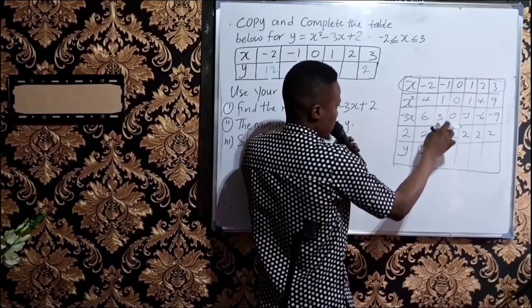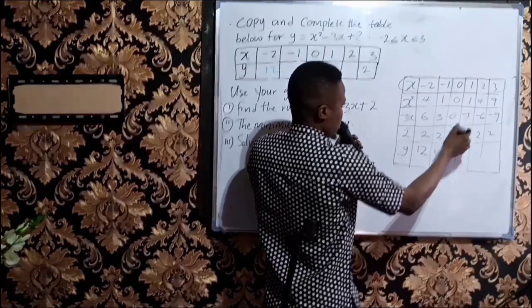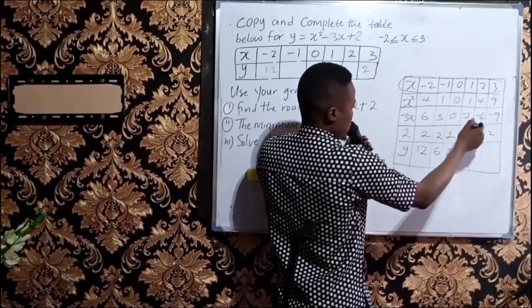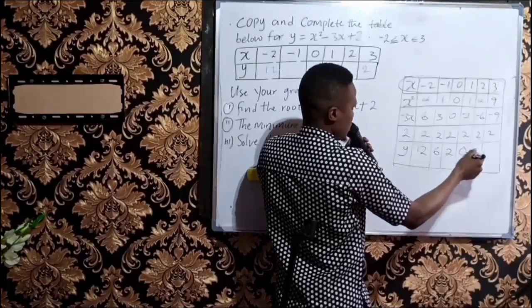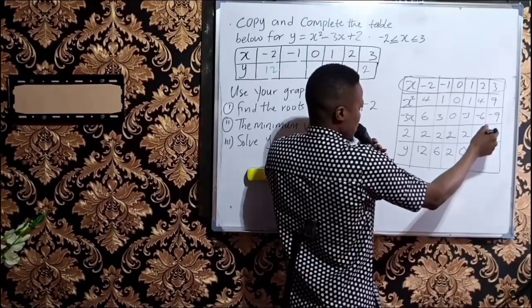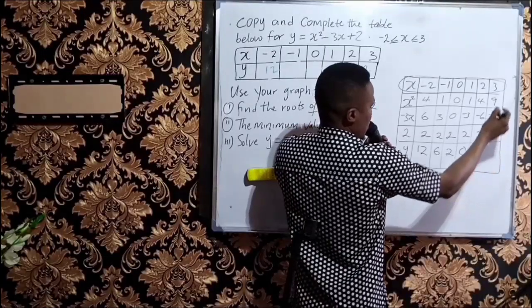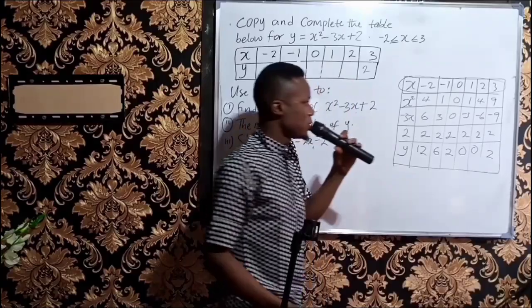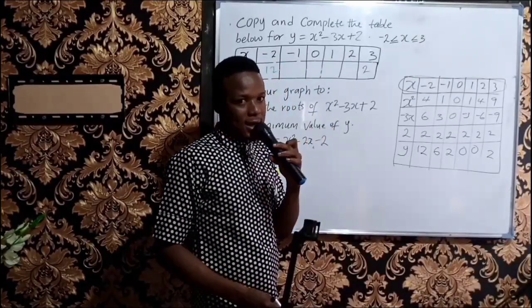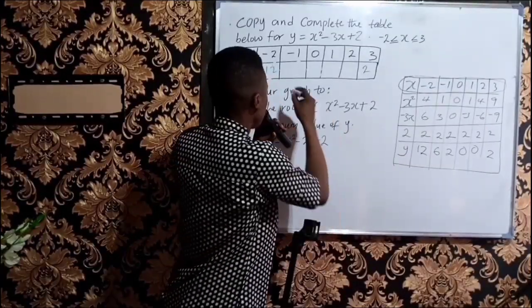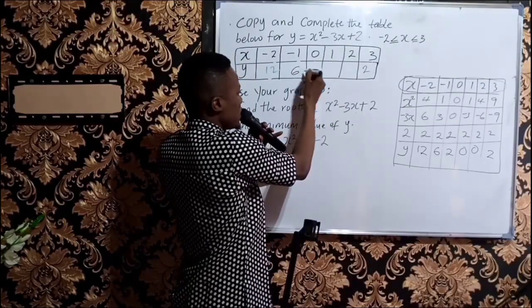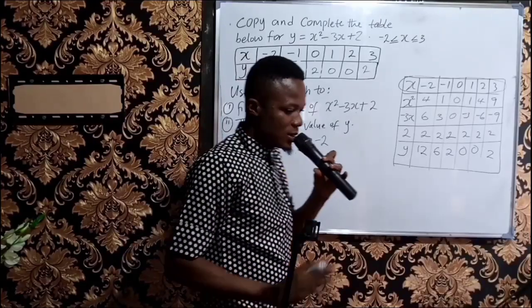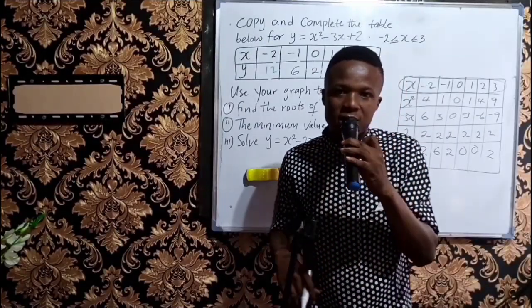Continuing: 1 plus 3 plus 2 is 6; 0 plus 0 plus 2 is 2; 1 minus 3 plus 2 is 0; 4 minus 6 plus 2 is 0; and 9 minus 9 plus 2 is 2. So we have carefully computed the values of y. You now fix them into the table to complete it: 12, 6, 2, 0, 0, and 2. This is how to copy and complete a table of values.